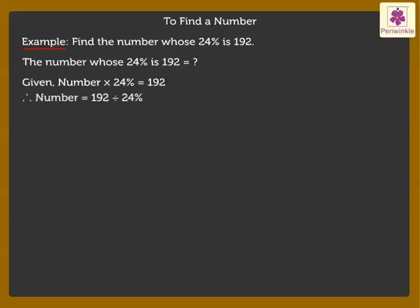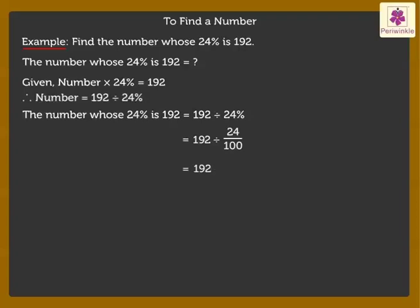Thus, the number whose 24% is 192 is equal to 192 divided by 24%, which is equal to 192 divided by 24 upon 100, which is equal to 192 into 100 upon 24. On simplifying, we get the answer as 800.